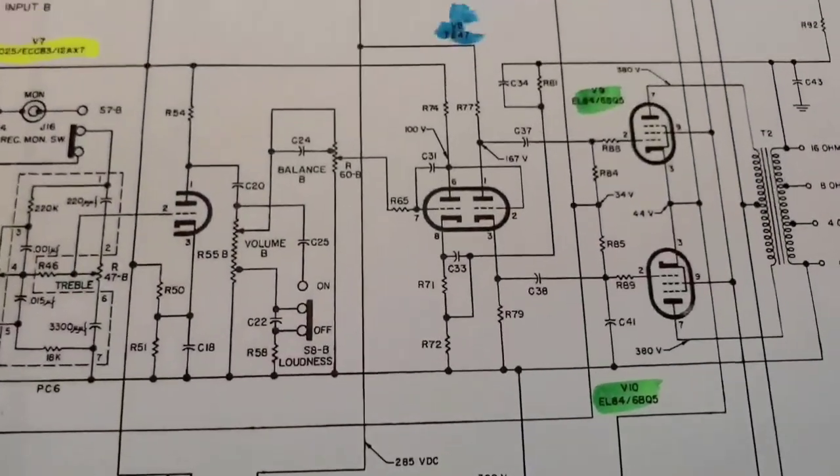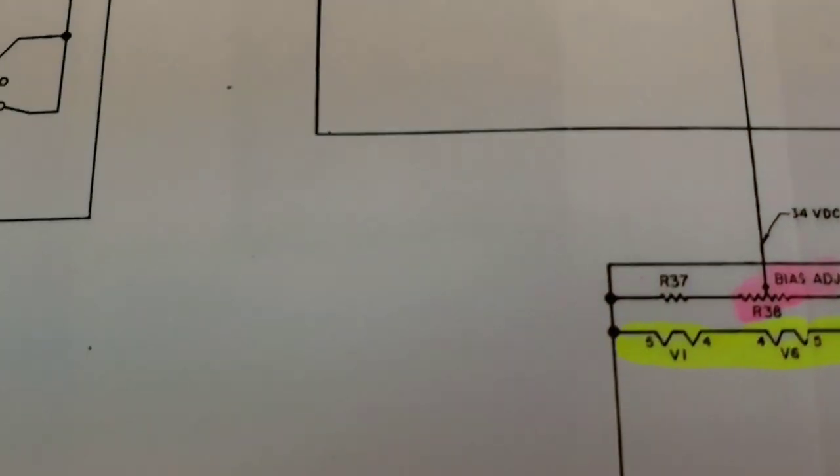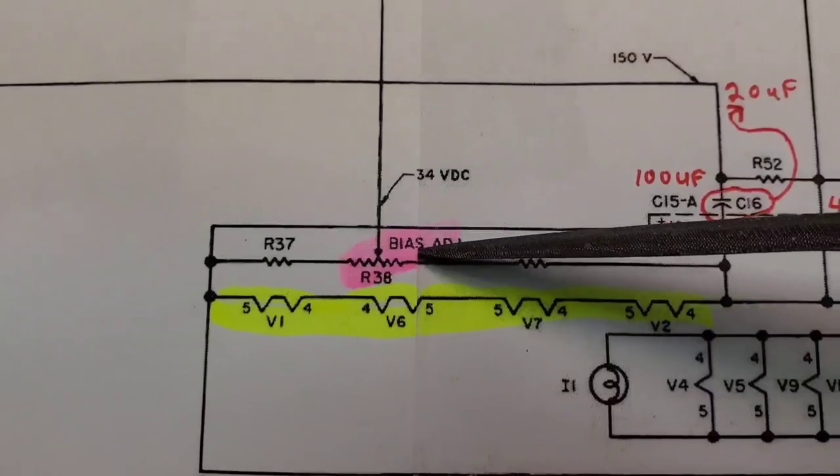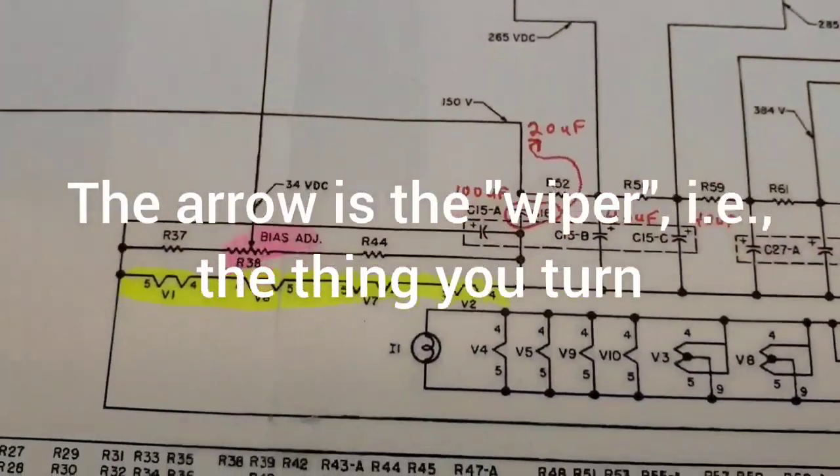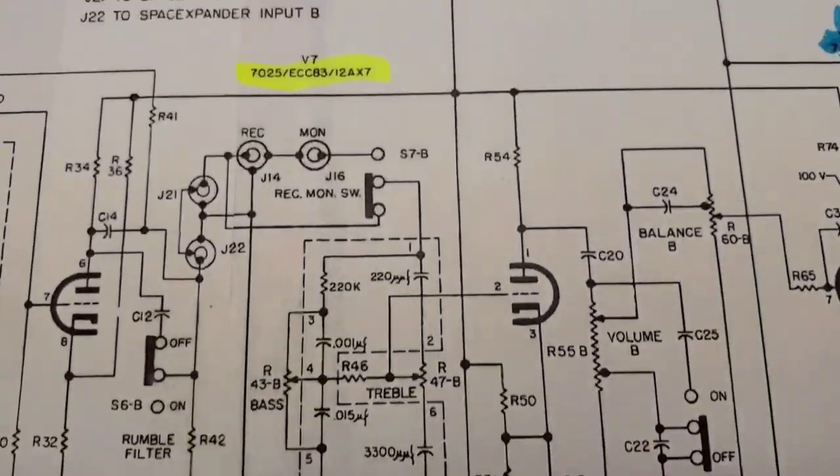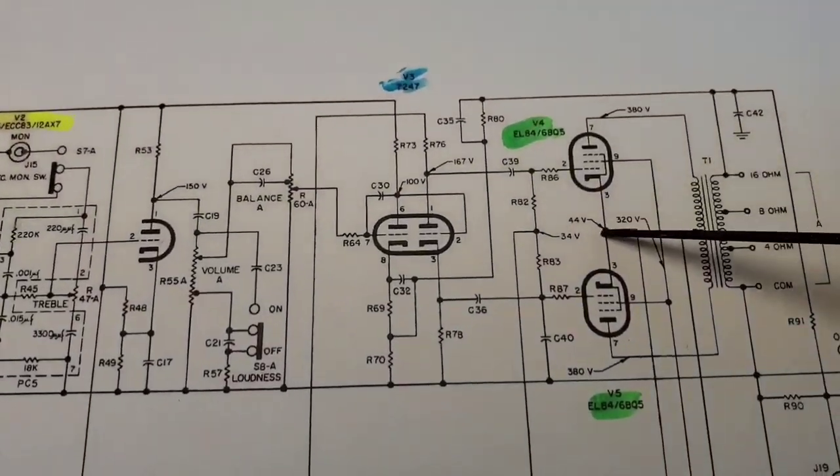Now let's jump up to the bias. Here's your bias adjustment, by the way. This pink thing. That's a pot. Now this is what they call automatic bias. Yes, automatic bias, cathode bias. And it's even a little more complicated than that.